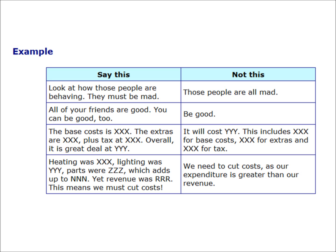This includes XXX for base costs, XXX for extras, and XXX for tax. Say this, heating was XXX, lighting was YYY, parts were ZZZ, which adds up to NNN. Yet revenue was RRR.